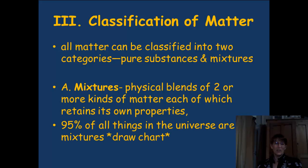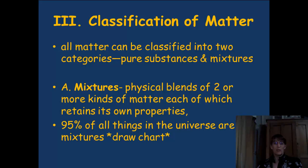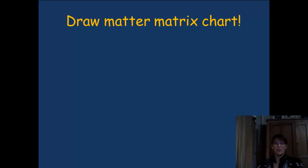95% of everything on the planet and in the universe are going to be mixtures. It says to draw the chart — we'll do that in class. When you come in, we'll have time to create a matter matrix, a little chart that tells how you tell if something's heterogeneous, homogeneous, and such.